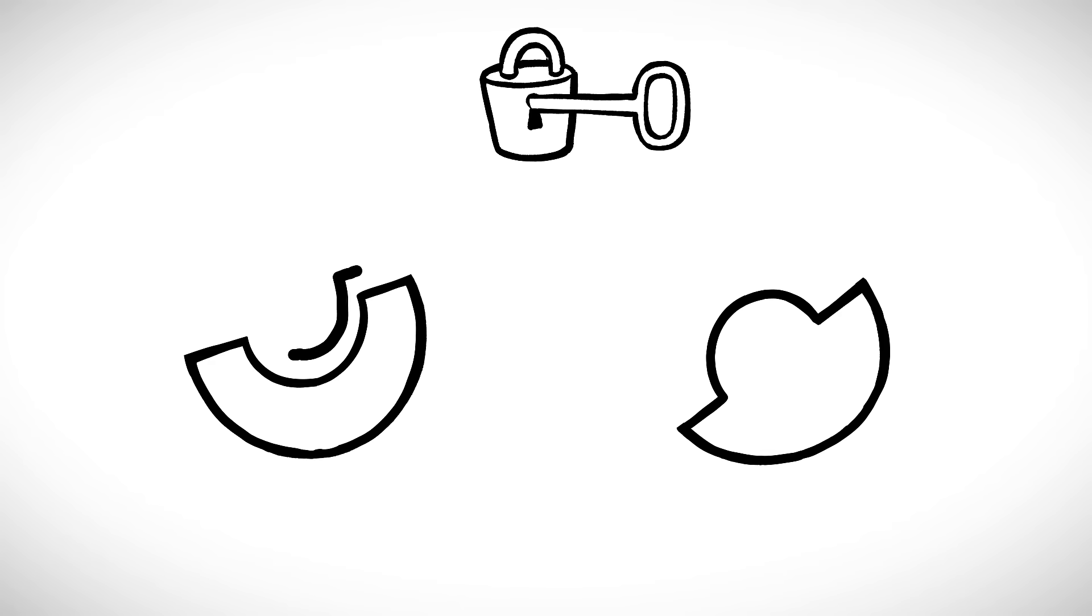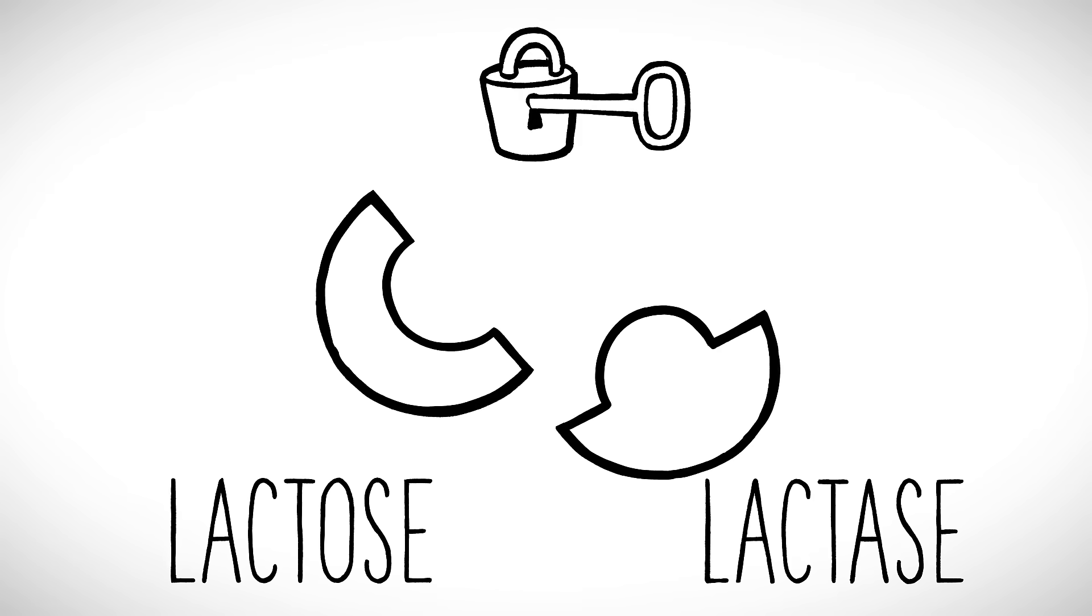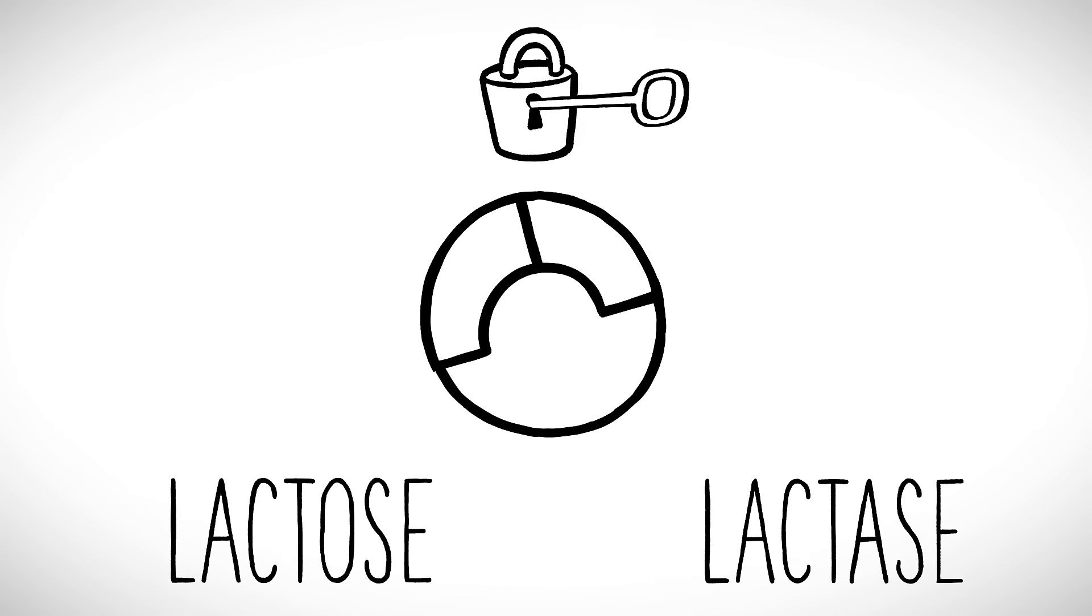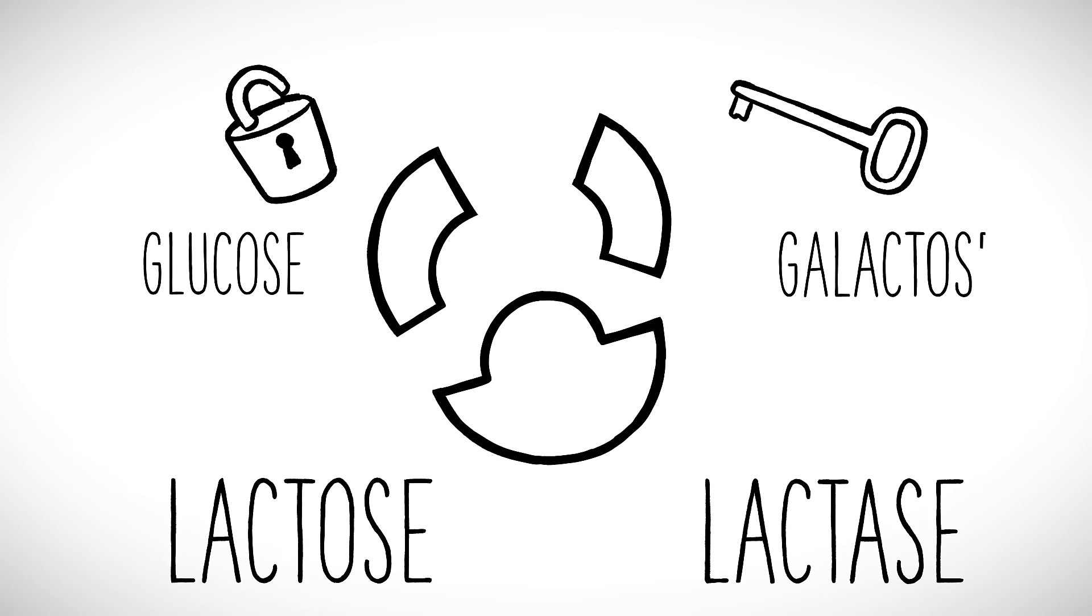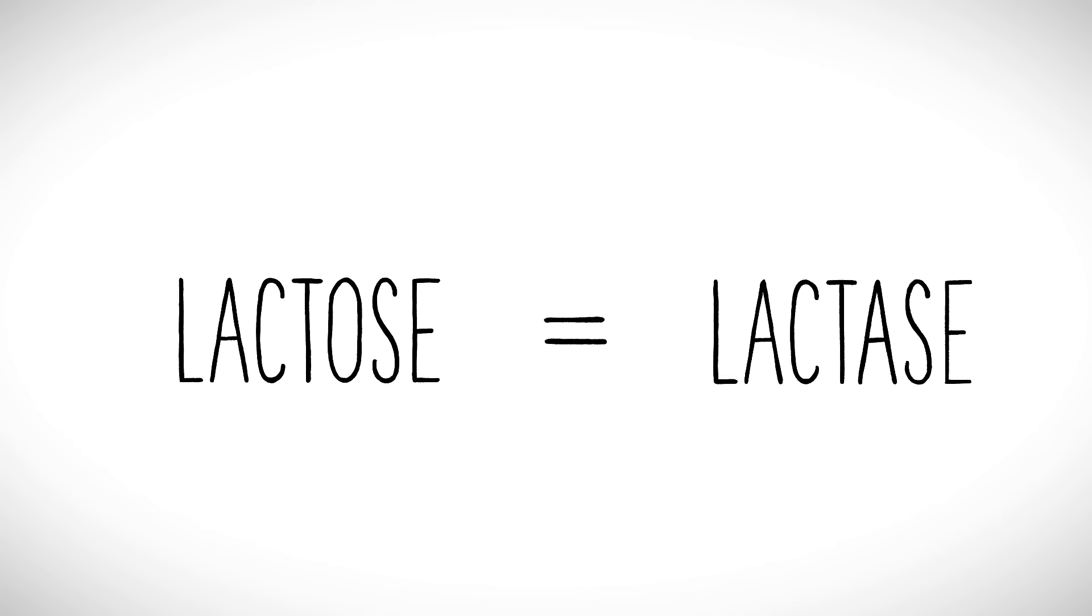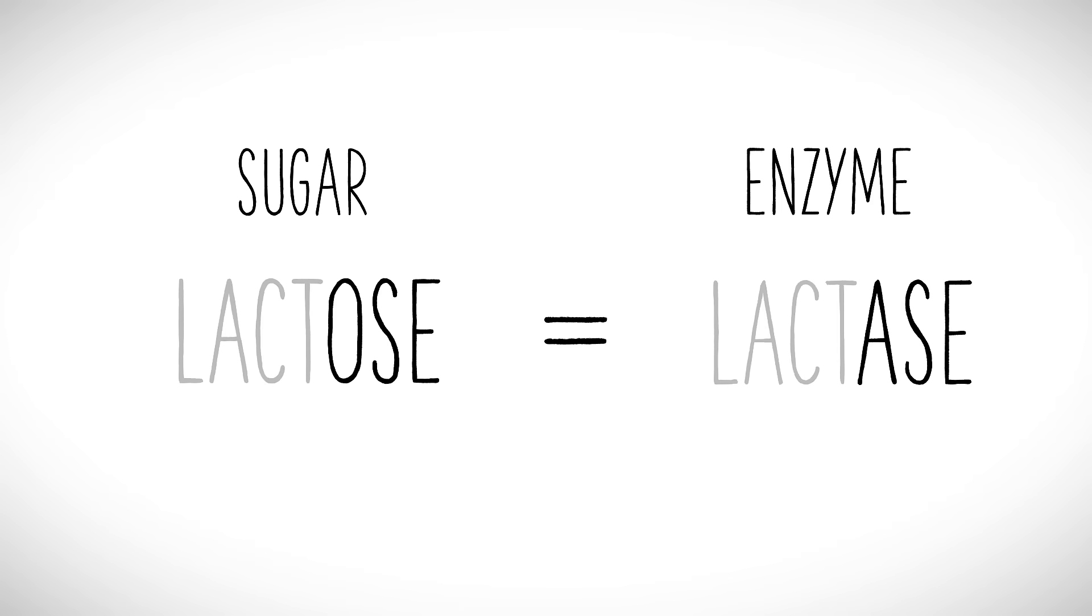Take a dairy sugar, lactose. The enzyme lactase fits like a hand-in-glove with lactose, breaking it down into its more digestible components, glucose and galactose. Side note: even the names fit together. Many enzymes end with 'ase' while the corresponding sugars they break down end with 'ose.' But we digress.